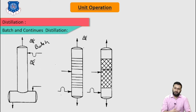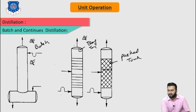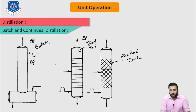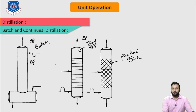This symbol represents continuous distillation. In continuous distillation, this is a tray tower, and this represents a packed tower. So continuous distillation can be done in two types of columns: a tray column and a packed column. Both are schematic representations for distillation — one for batch and one for continuous distillation.